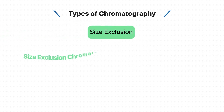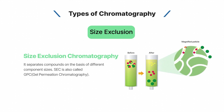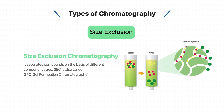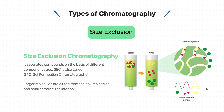Size exclusion chromatography separates compounds on the basis of different component sizes. SEC is also called GPC, gel permeation chromatography. Larger molecules are eluted from the column earlier, and smaller molecules later on.